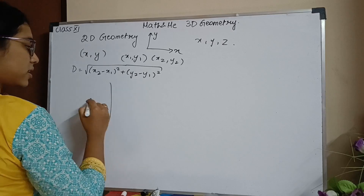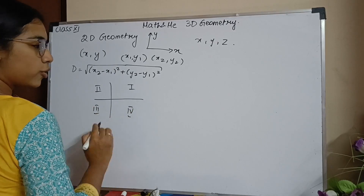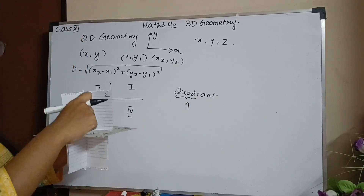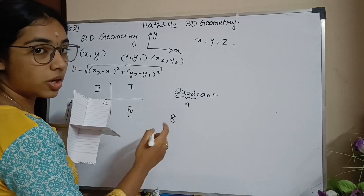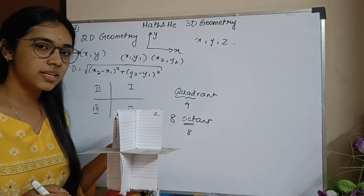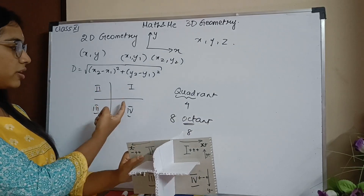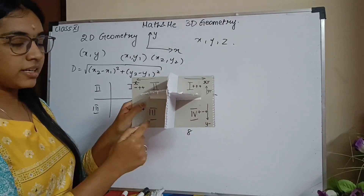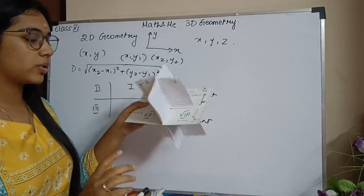In 2D, you learned there are four quadrants — first, second, third, and fourth. 'Quad' means four. But here in 3D, I have 1, 2, 3, 4, 5, 6, 7, 8 — I have 8 sections. So I no longer call them quadrants; I call them octants. 'Octa' means eight. I have eight octants when I have three axes. They are numbered first, second, third, fourth going anticlockwise, and then fifth, sixth, seventh, and eighth on the other side.